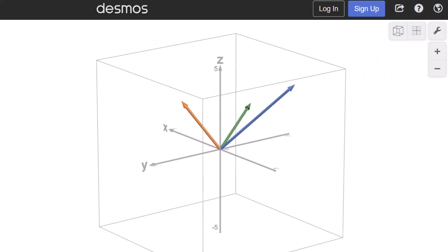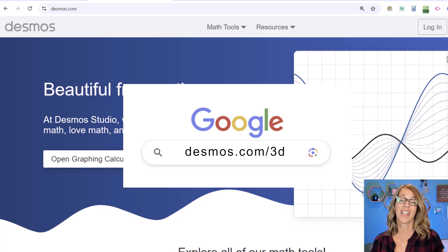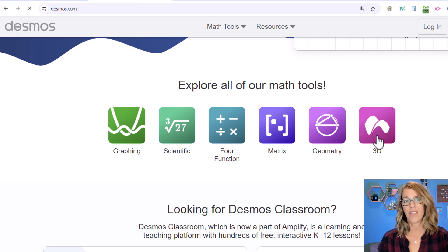Desmos continues to improve and can now do vectors in 3D, so let's take a look. You can get here by going to desmos.com/3D or scroll down on desmos.com until you see the 3D icon for the 3D calculator.